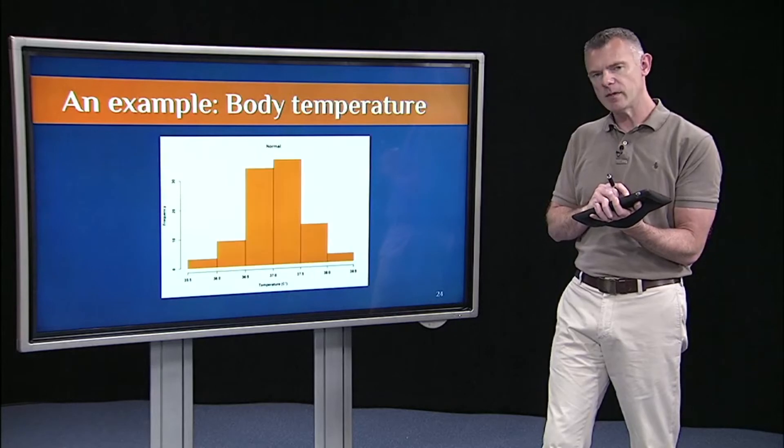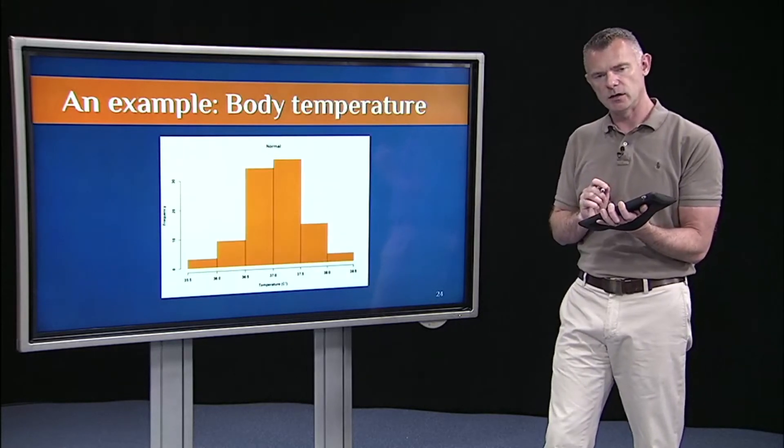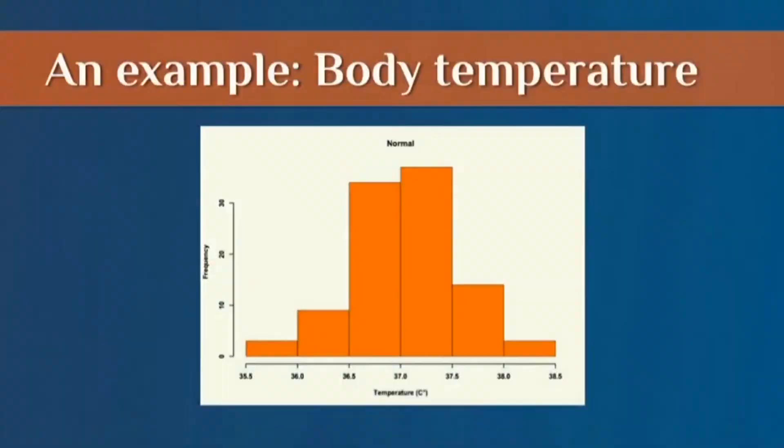Here's the same exact data, just plotted in terms of Celsius. So now on the x-axis, you see, we're just plotting temperature measured in degrees Celsius. Again, it's a normal distribution.